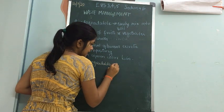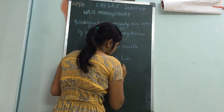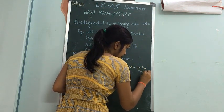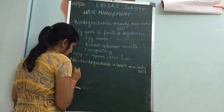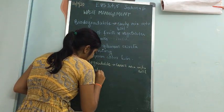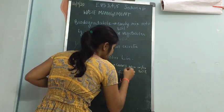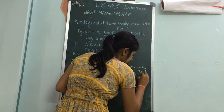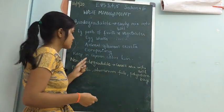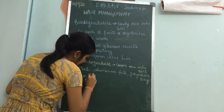Non-biodegradable waste cannot mix into the soil. Examples include plastic, aluminium foils, and polythene bags. There are several ways to decompose non-biodegradable waste. Non-biodegradable waste should always be kept in a blue color bin.